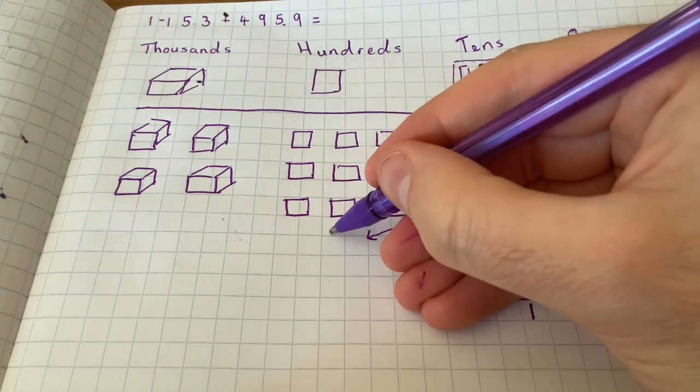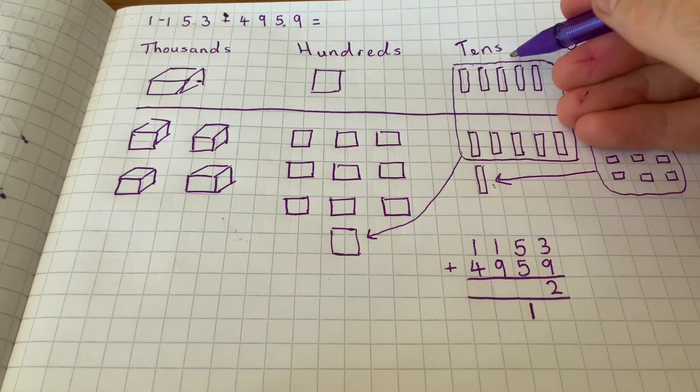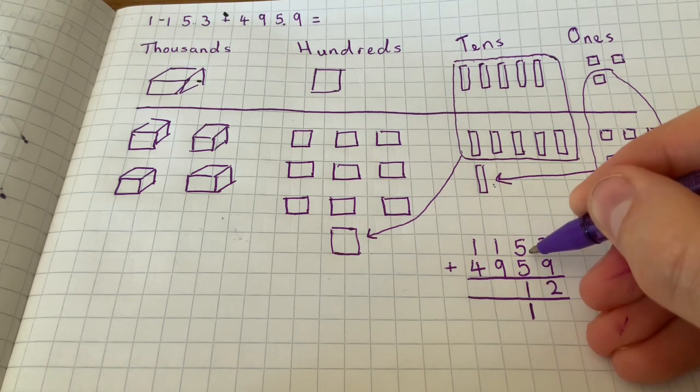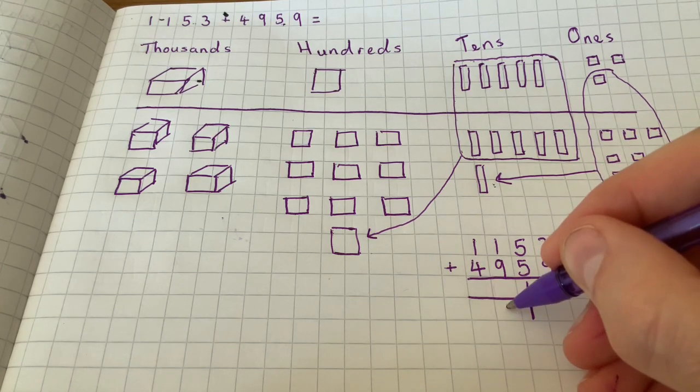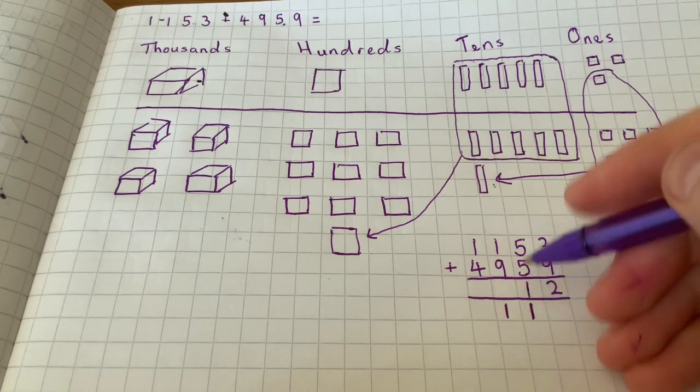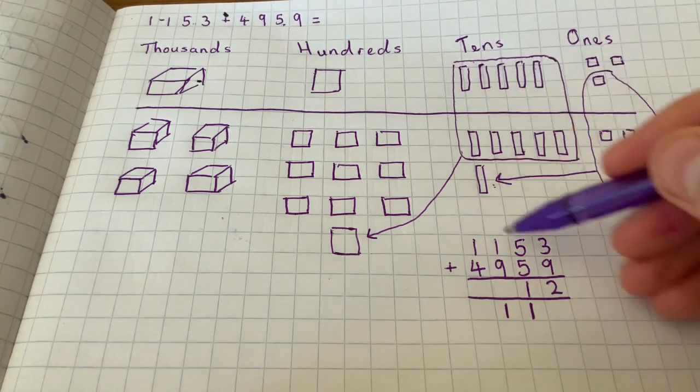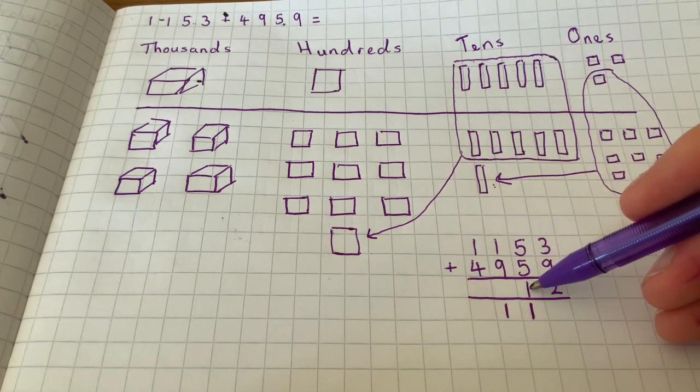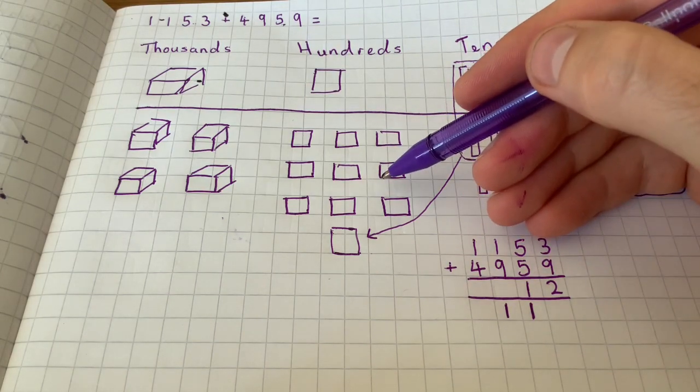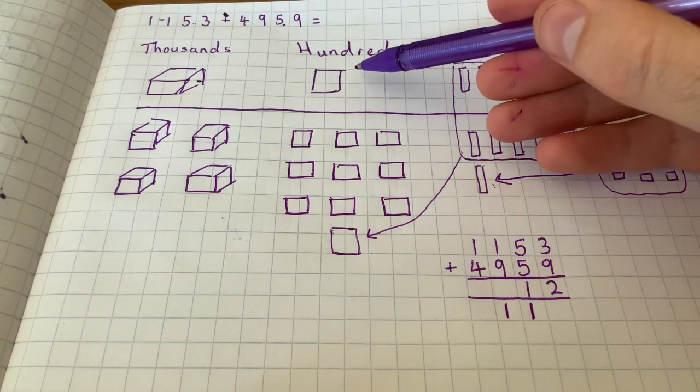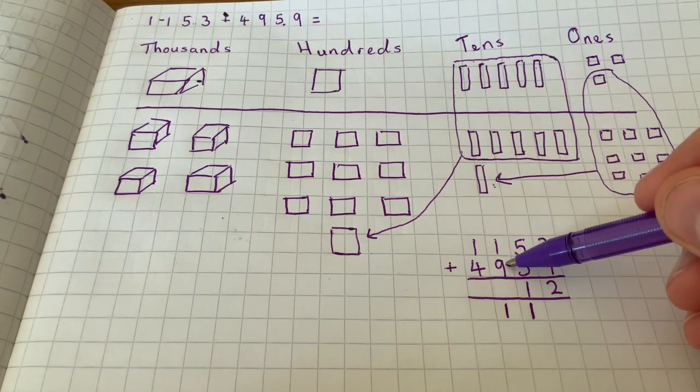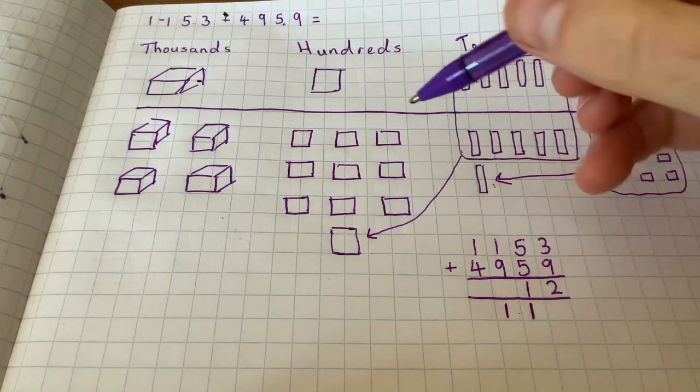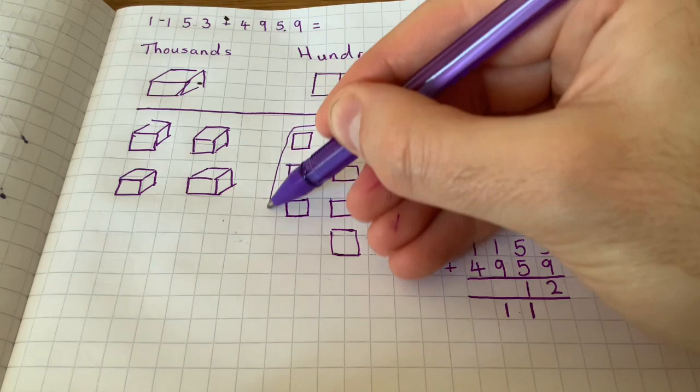So ten tens makes one hundred, so I've got one ten left over. And I've got a hundred there. Remember, because I've got eleven tens, so I've regrouped my ten from my eleven there. I put my one ten there. Moving on to this one now, we've got one hundred add nine hundred add one hundred, so this would make eleven hundred. So again I can regroup ten hundreds.